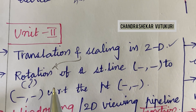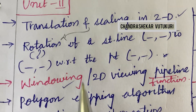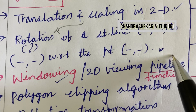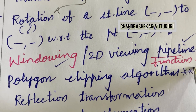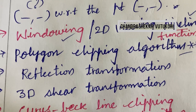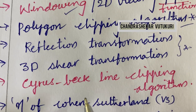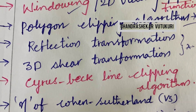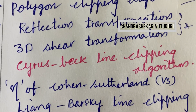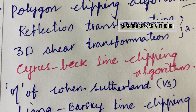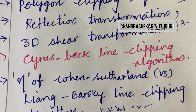Unit 2 is all about translation, scaling, and rotation in 2D — said to be a short question. Determine the rotation of a straight line for given points with respect to the origin — windowing is a short question. 2D viewing pipeline and its functions — short question. Polygon clipping algorithm is said to be a topmost question. Reflection transformation and 3D shear transformation may be short questions. Cyrus-Beck line clipping algorithm and efficiency of Cohen-Sutherland versus Liang-Barsky line clipping algorithm is also said to be a topmost question, which may occur in 4A, 4B, and 1C.